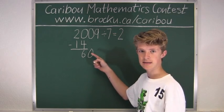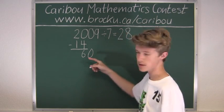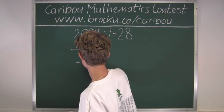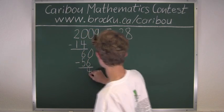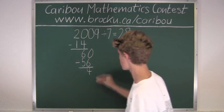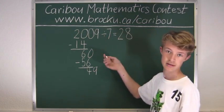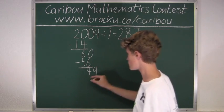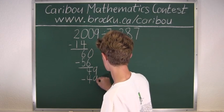Then 7 goes into 60 eight times. 8 times 7 is 56, which we will subtract from 60. Then we will get 4 and we will bring down the 9. Then 49 divided by 7 is 7, which is 49 and then we have 0. So no remainder.